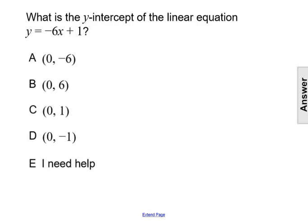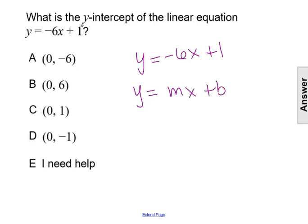What is the y-intercept of the linear equation y equals negative 6x plus 1? Well, the linear equation y equals negative 6x plus 1 is in slope-intercept form. It's in the format of y equals mx plus b, where if we're looking for the y-intercept, that is the value of b — it's the constant in the equation.